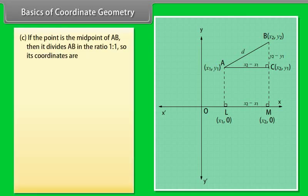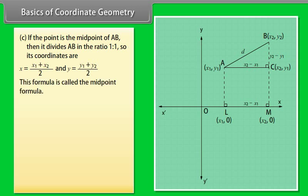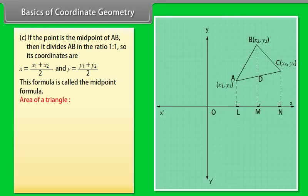If the point is the midpoint of AB, then it divides AB in the ratio 1:1, so its coordinates are X = (X1 + X2)/2 and Y = (Y1 + Y2)/2. This formula is called the midpoint formula.